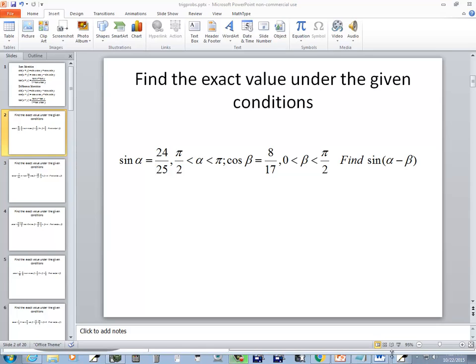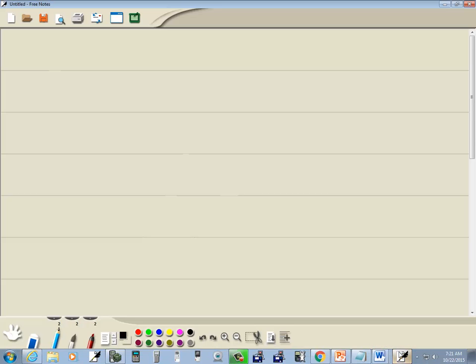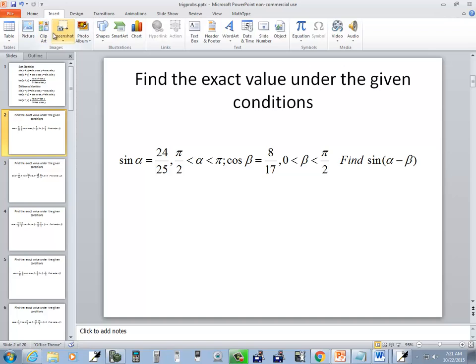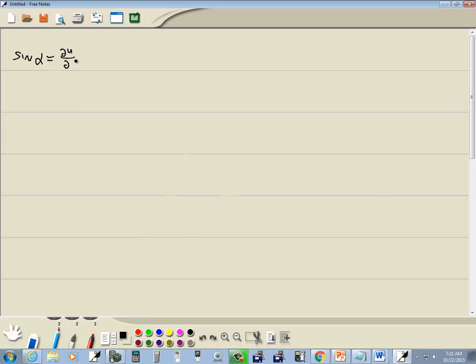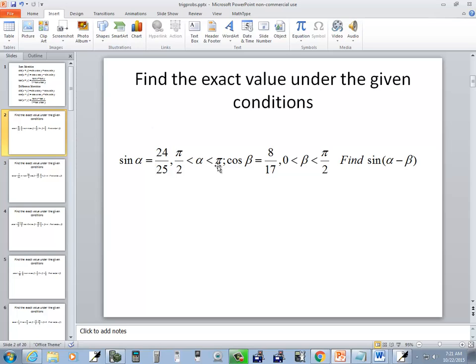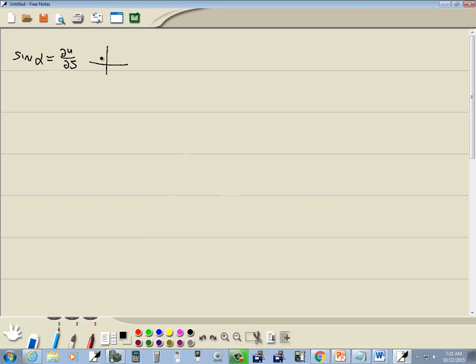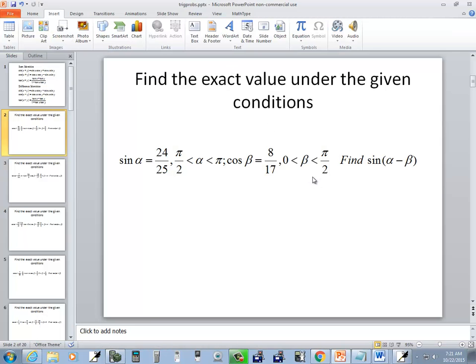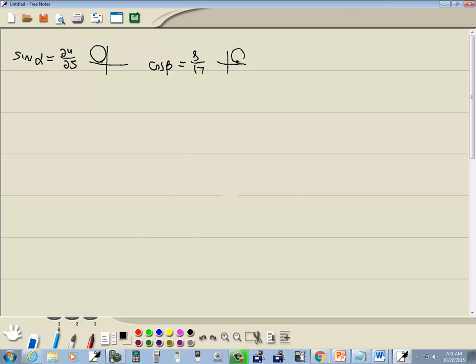Let's take a look at this problem. We've got sine alpha is equal to 24 over 25 from pi over 2 to pi. Now I'm just going to write down the quadrant here. Pi over 2 to pi is our second quadrant. And then cosine beta is equal to 8 over 17. And this is in the first quadrant from 0 to pi over 2. And we want to find sine of alpha minus beta.